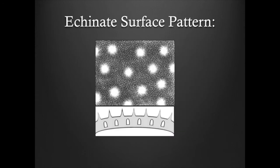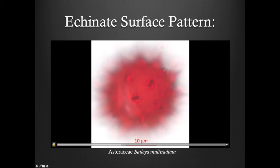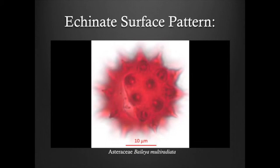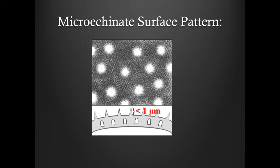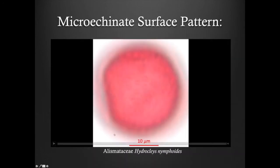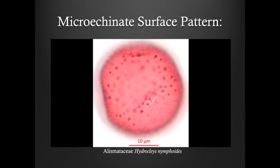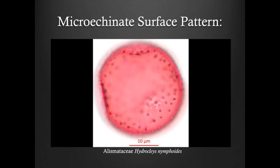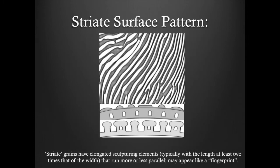Here is an example of an echinate grain. And here's an example of a microechinate grain. Striate grains have elongated sculpturing elements that run more or less parallel to each other. The surface may even have the appearance of a fingerprint.